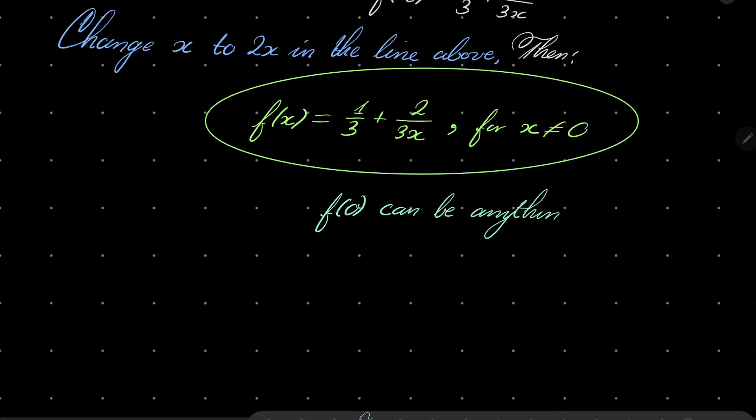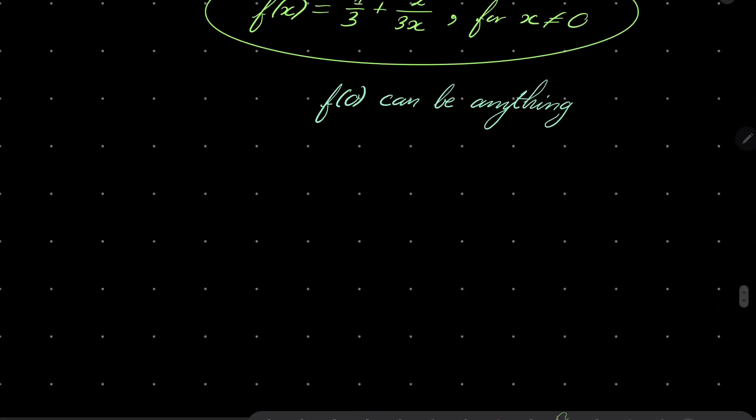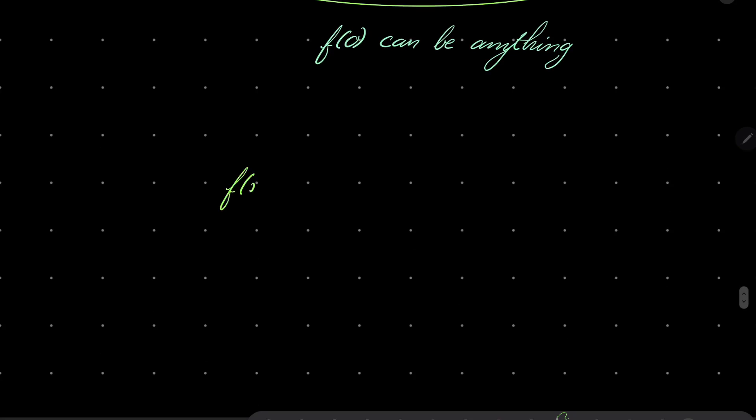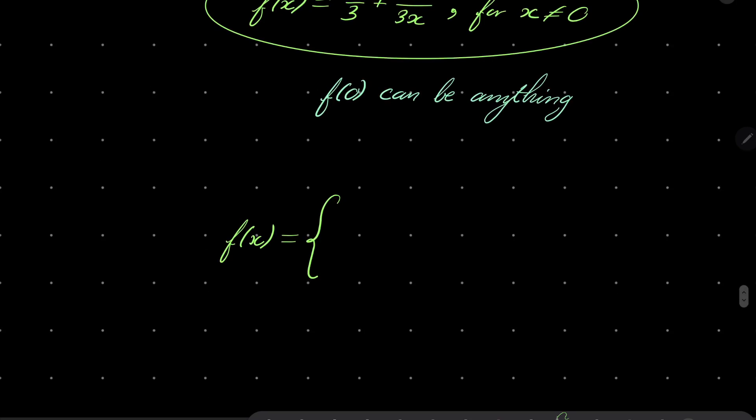It can be anything, which means that the general form of our function is the following: f(x) equals 2/(3x) plus 1/3 for x not equal to zero, and it's c for x equals zero.